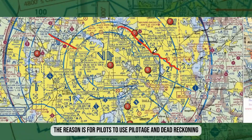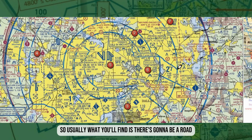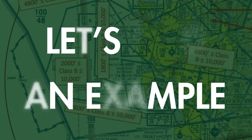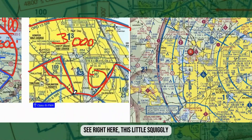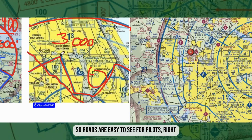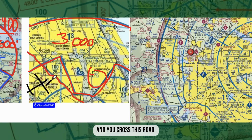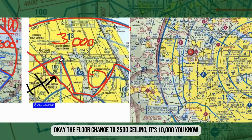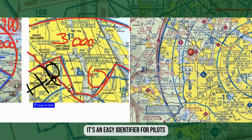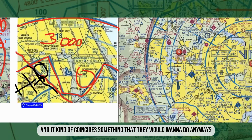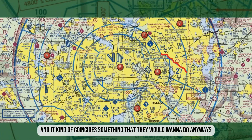The reason is to help pilots use pilotage and dead reckoning. Usually you'll find a road right underneath that squiggly line. You can see here how it continues along a road. Roads are easy to see for pilots, so when you're flying and you cross that road, you know the floor changed — say to 2,500 with a ceiling of 10,000. It's an easy identifier for pilots, and they use it when it coincides with something that makes sense.